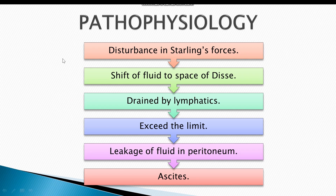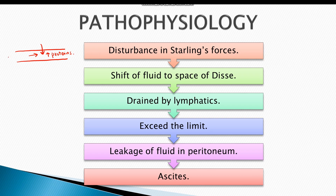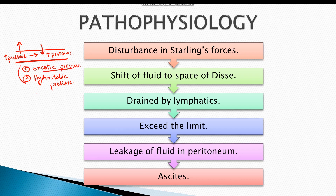Ascitic fluid accumulates in the peritoneum due to disturbance in Starling's forces. Oncotic pressure, driven by proteins in the blood, shifts fluid from extravascular to intravascular compartment. Hydrostatic pressure shifts fluid in the opposite direction. In liver cirrhosis, both forces are disturbed: there is decreased oncotic pressure due to leakage of albumin into the peritoneum, and increased hydrostatic pressure due to constriction of sinusoids, shifting fluid to the extravascular compartment.